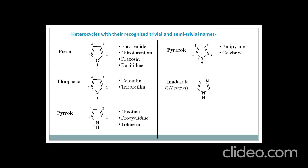To remember this: the 'M' in imidazole indicates 'meta', meaning the nitrogens are at the 1 and 3 positions. You give the numbering starting from the nitrogen that contains the hydrogen, so 1, 2, 3 to that nitrogen. Remember the difference between pyrazole and imidazole: in pyrazole the 2 nitrogens are at positions 1 and 2, whereas in imidazole the 5-membered ring contains 2 nitrogens at positions 1 and 3.